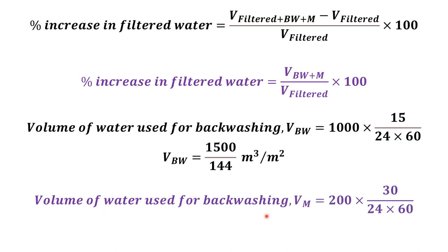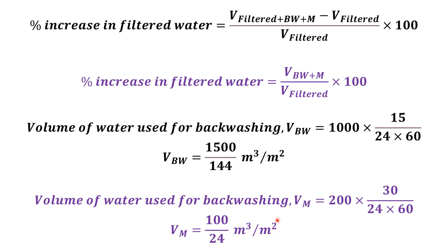Volume of water used for maturation: unless a different rate is specified, the rate of maturation is taken as the rate of filtration, which is 200 m³/day/m². The time for maturation is 30 minutes. Converting 30 minutes to days: 30 ÷ (24 × 60). Volume = 200 × (30/1440) = 100/24 m³/m².